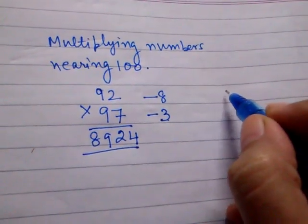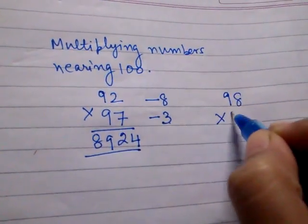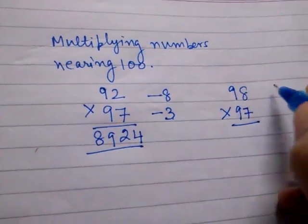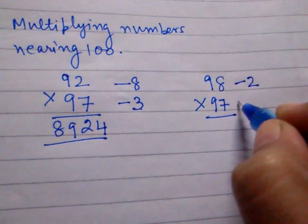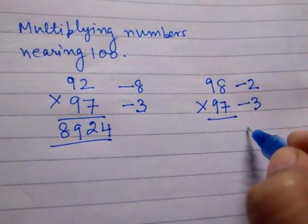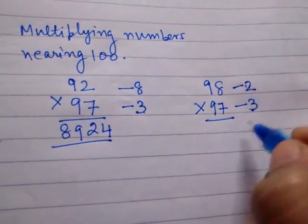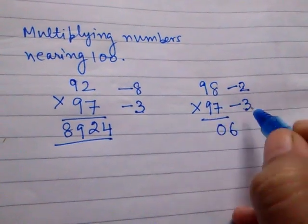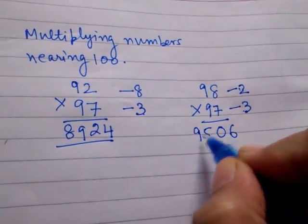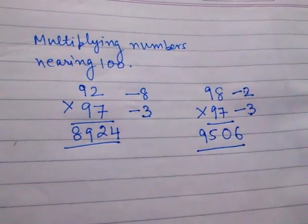Now take another example: 98 multiply by 97. 98 is 2 short from 100 and 97 is 3 short from 100. Multiply these two, we get 06, and 98 minus 3 is 95. So our answer is 9506.